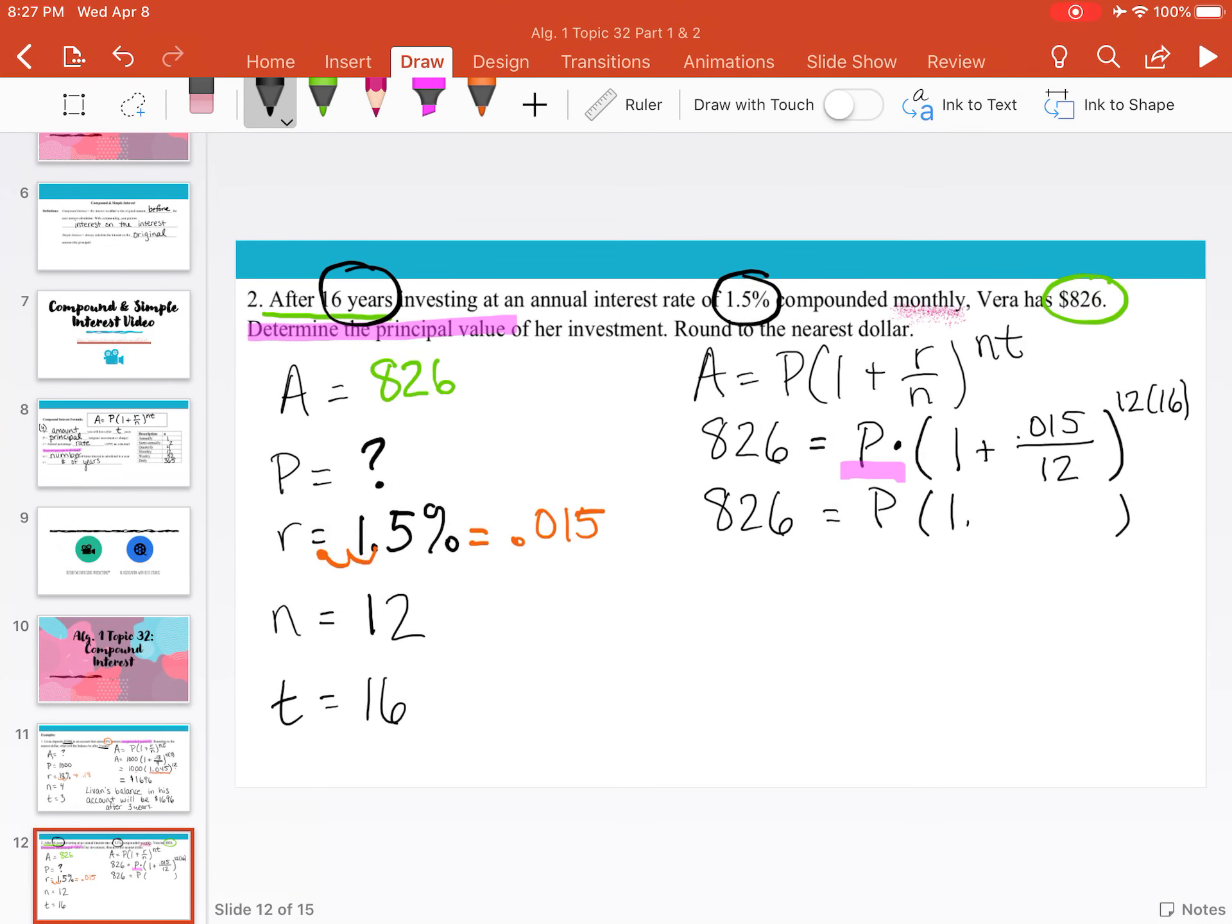And that gives me 1.00125. So in my parentheses I have 1.00125. Now my exponent is 12 times 16, which is 192. So this looks a little bit more manageable. But still, we want to get P alone, and we have multiplication here.